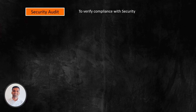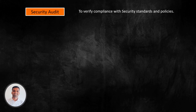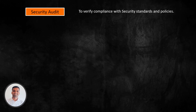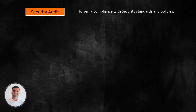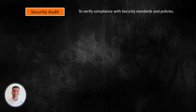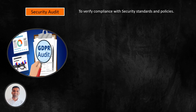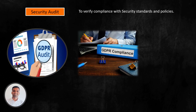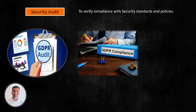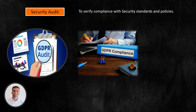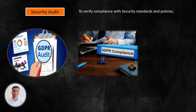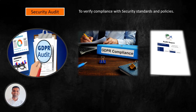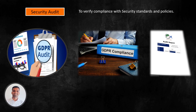Security audit means verifying compliance with security standards and policies. It is done to check whether you are following your own policies and procedures. For example, a company might conduct a security audit to check its compliance with GDPR. The auditors would review the company's data protection policies, procedures, and controls, and check whether the company is collecting, storing, or processing personal data in accordance with GDPR requirements. The result of the audit would be a report detailing the company's compliance with GDPR and any areas that need improvement.